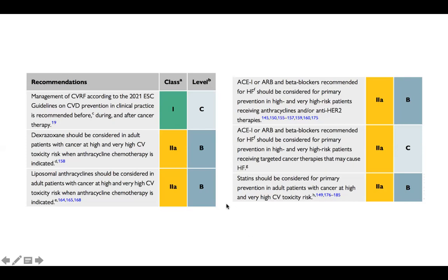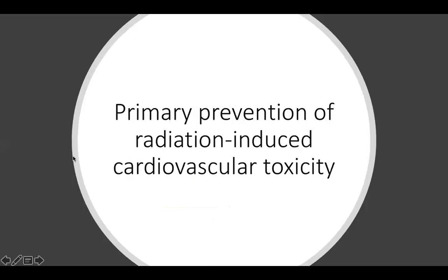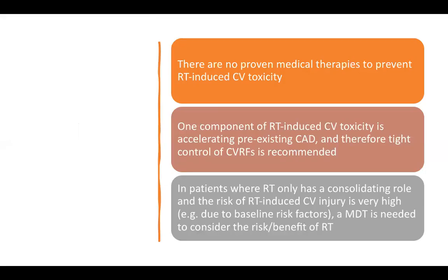To summarize anthracyclines primary prevention: from the cardiologist's point of view, for patients at high or very high risk, ACE inhibitors or ARBs with beta blockers can be used. If committed to anthracyclines and the patient has or is at high risk for cardiac dysfunction, appropriate protective measures should be taken.